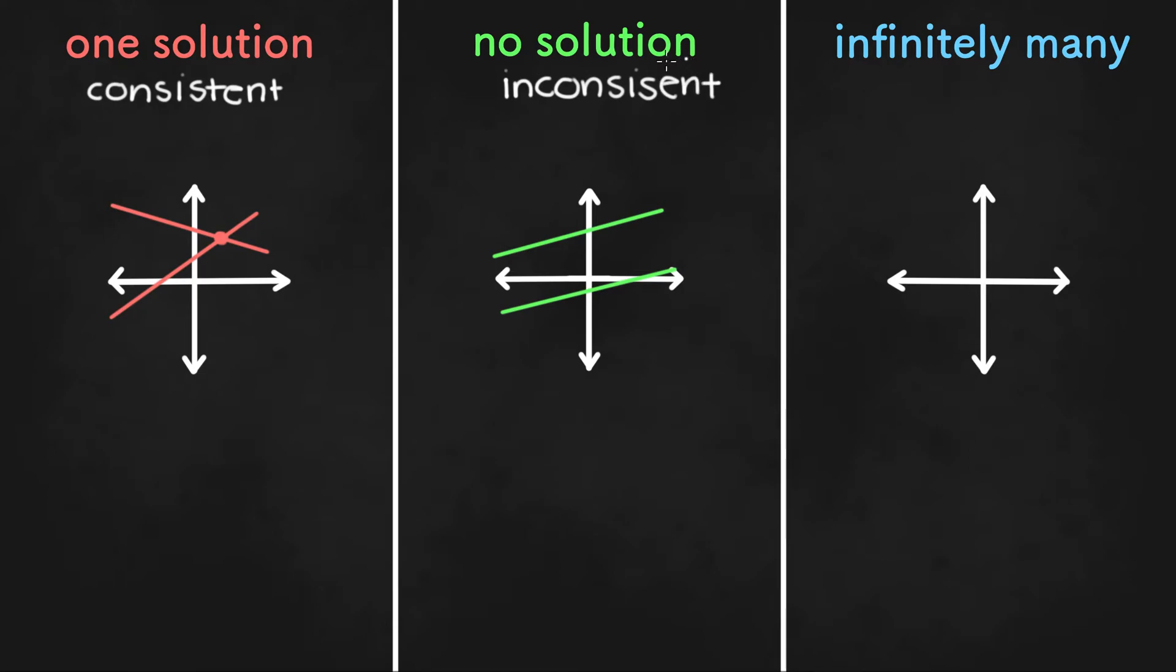Now, infinitely many solutions will look like this. We have one line like this, and then the other line will be right on top of that line. So you can barely tell that there are two different lines. That's what you call infinitely many solutions. It's basically when you have the exact same equation written in two different ways. And there's infinitely many solutions because the two lines intersect at infinitely many points. And this type of system of equations will be called dependent systems.